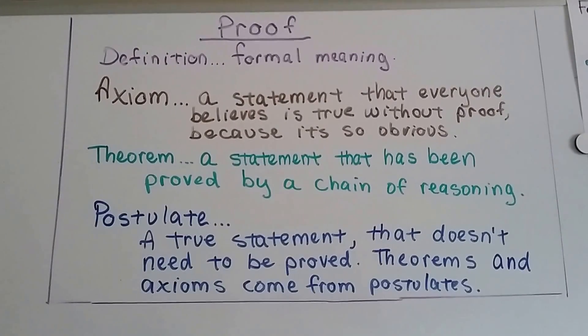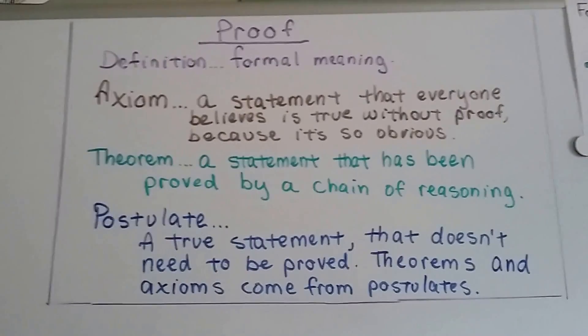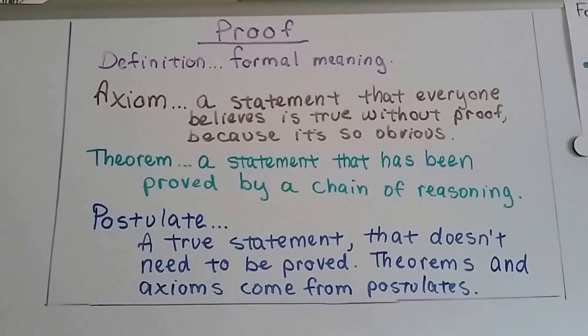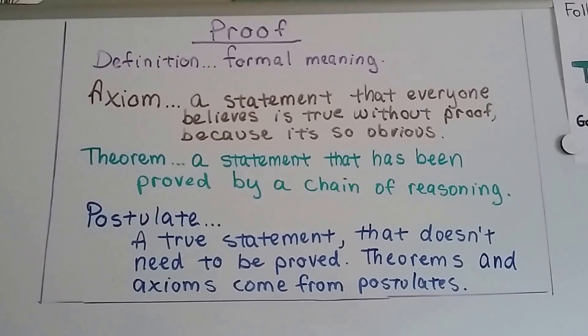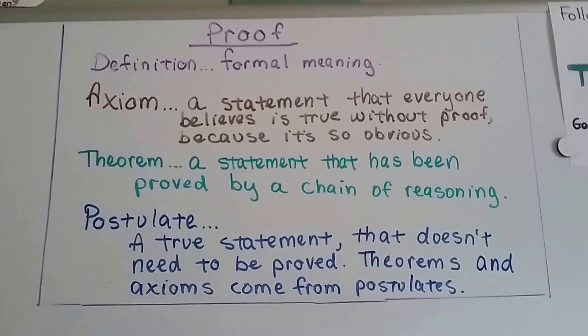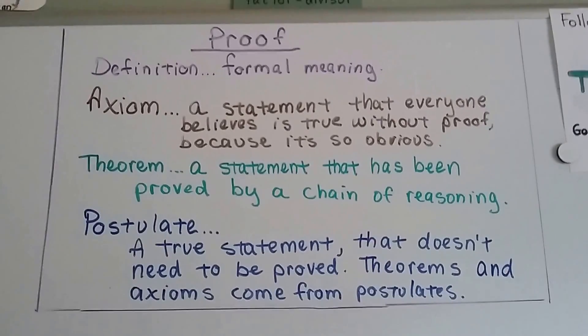And a theorem, that's a statement that's been proved by a chain of reasoning. And that's what we're doing now, we're talking about chain of reasoning. And postulates, it's a true statement that doesn't need to be proved and theorems and axioms come from postulates. So we need those things.